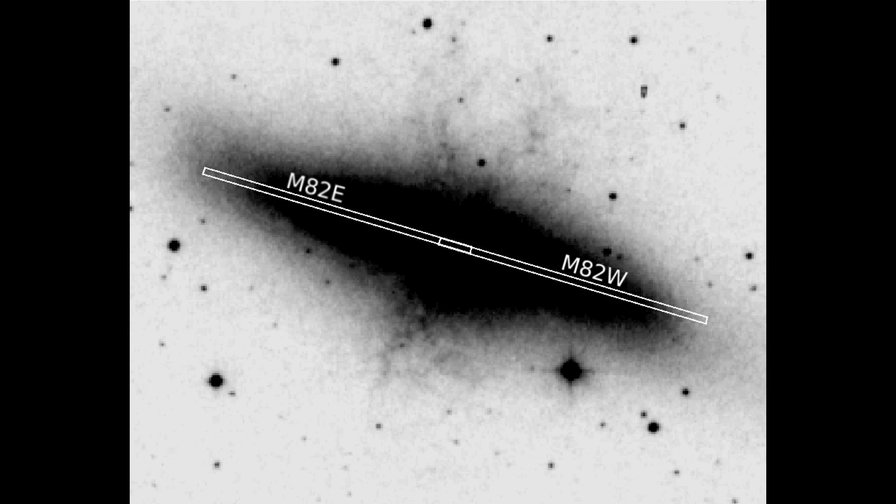Each slit is approximately 4 arcminutes in length, and they overlap on the center of the galaxy. The widths of the slits have been increased by a factor of 6 for ease of visibility in this figure.